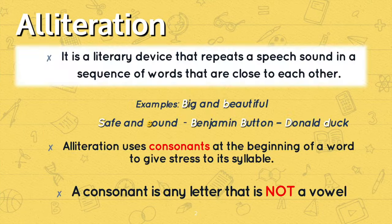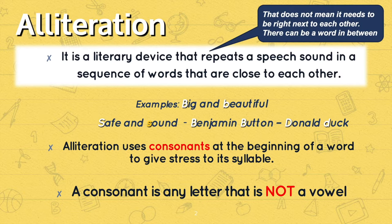Alliteration is a literary device that repeats a speech sound in a sequence of words that are close to each other. That does not mean it needs to be right next to each other — there can be a word in between, just like 'big and beautiful' or 'safe and sound.' And normally, for example, Benjamin Button or Donald Duck.